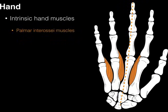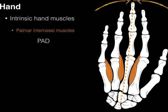The palmar interosseous muscles, shown in orange, number three, and they adduct — they pull the fingers toward the midline. The mnemonic is PAD: Palmar interossei ADduct the digits. This is why you'll often hear these muscles referred to as the PADs and DABs. These muscles are innervated by the ulnar nerve.